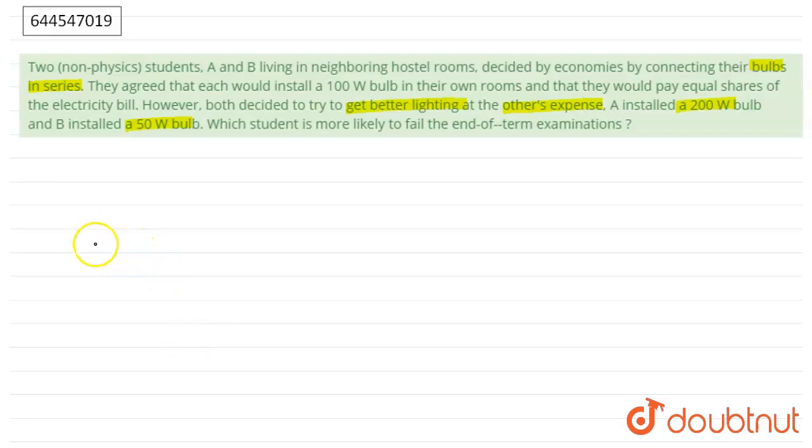According to question, they have used - A used bulb of 200 watt and B used 50 watt. So let's assume P1, the power of bulb 1, is equal to 200 watt, and for B, P2 is equal to 50 watt.